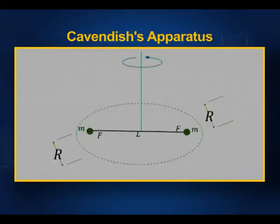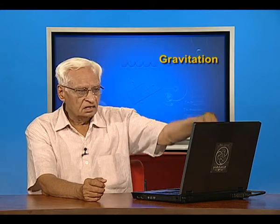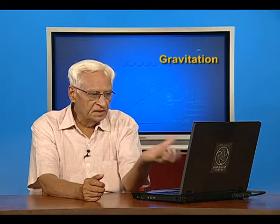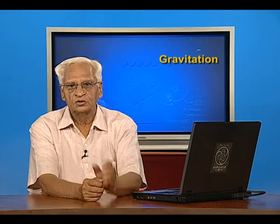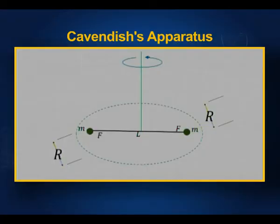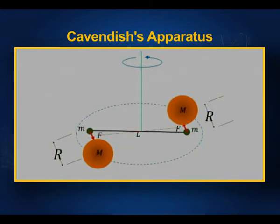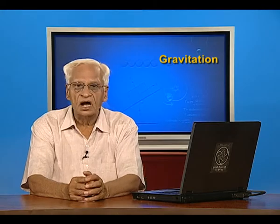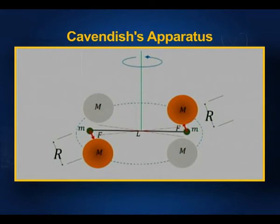Here is a very light beam with two small point masses or spheres at its two ends, suspended by a thread or fiber which produces a restoring couple when the beam rotates, causing the beam to deflect by a certain angle. Two large balls are mounted on a circular track and placed on either side of the small masses, exerting forces F on each other. These forces are equal and opposite and constitute a couple. The large masses are then rotated and brought near the small masses on the other side, so the beam deflects in the opposite direction. The mean of several such observations is taken as the deflection of the beam.